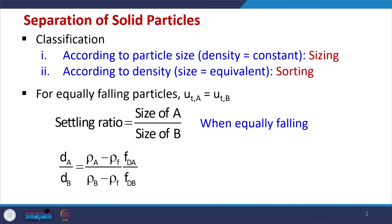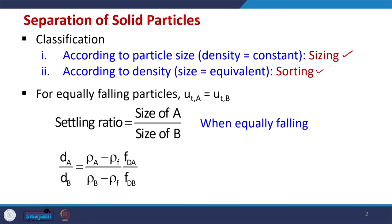There are two basic methodologies for separation of solid particles: sizing and sorting. Sizing is where the density is constant but there is a difference in particle size — such as grains of the same size with density differences that can be separated by sizing. Similarly, if the size is the same but there is a density difference, separation is called sorting. Both methods are commonly used in particulate separation and can be extended to wastewater treatment.